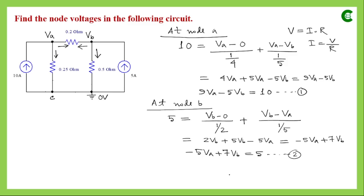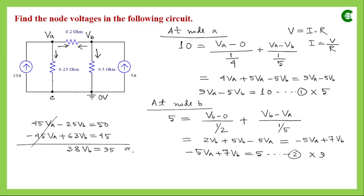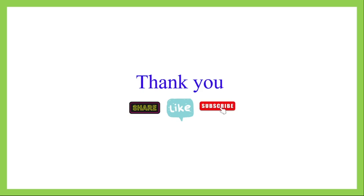Solving the two equations — multiplying the first by 5 and the second by 9 — we get VB = 95/38 = 2.5 volts. Substituting VB = 2.5V into either equation gives VA = 2.5 volts as well. This is how we apply KCL to simplify an electrical network. For more complex exercises on KVL and KCL, separate dedicated classes have been taken, with links in the description box. That ends today's class. See you in the next class. Thank you.